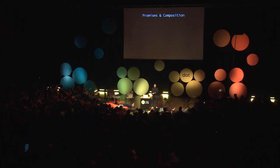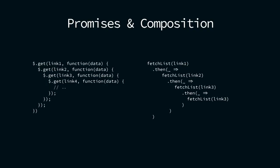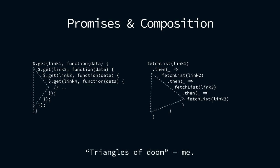When promises were added to JavaScript, they promised a way out of callback hell. And then you see that even with promises you can write very callback-heavy code. I also call them triangles of doom.